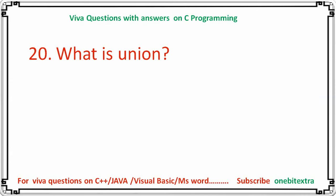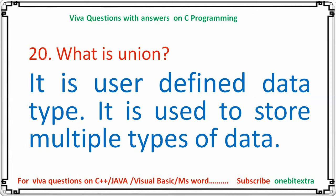Next question: what is a union? It is also a user-defined data type used to store multiple types of data. Unlike structure, union uses the same shared storage area in memory for each of its members.